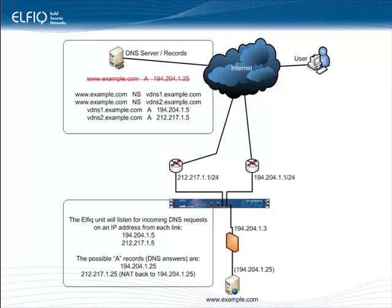We've also defined those name servers with A records. vdns1.example.com has an A record pointing to 194.204.1.5, and vdns2.example.com has an A record pointing to 212.217.1.5 — an IP address from the secondary link. The Elfic unit is configured to listen for DNS requests on 194.204.1.5 and 212.217.1.5, so inbound DNS requests destined for those addresses will be analyzed.